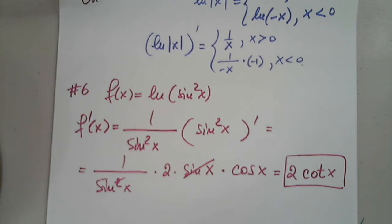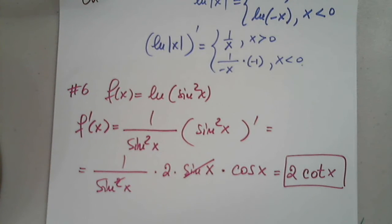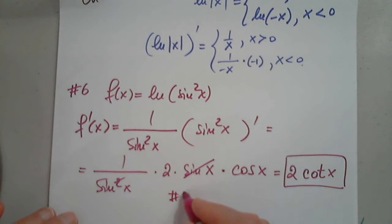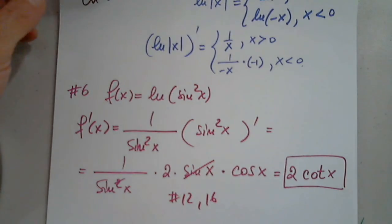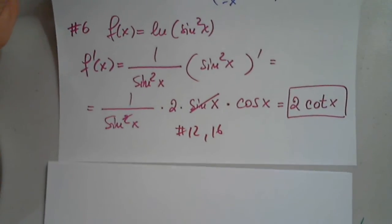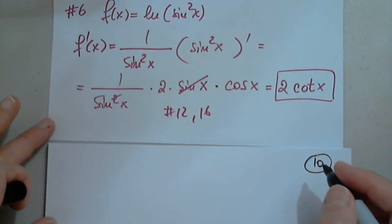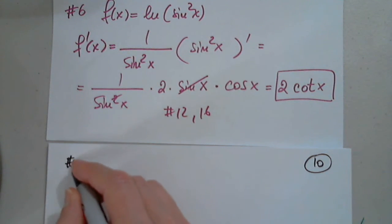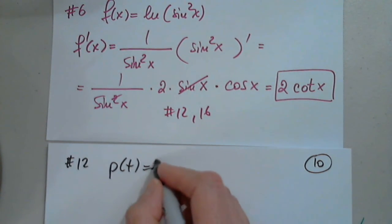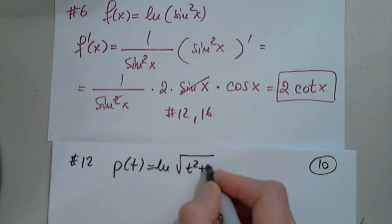Any other natural log function you would like to look at? Let's do number 12 and 16. So number 12 is p of t equals natural log of the square root of t squared plus 1. And let me also copy number 16.